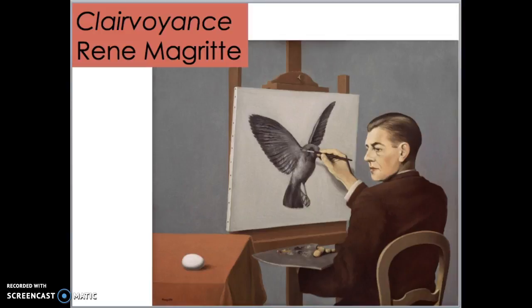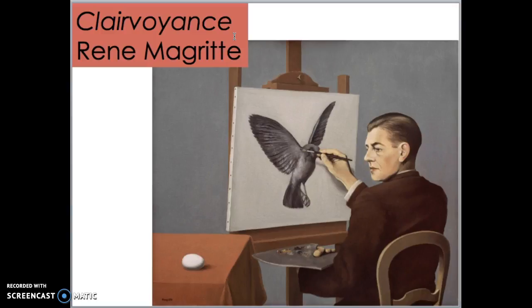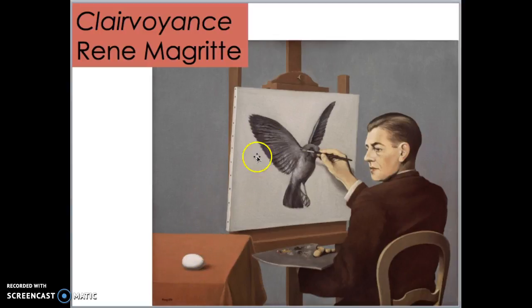Here's another title, and once you learn it you're going to love knowing this word: Clairvoyance. Say it again — clairvoyance. Clairvoyance means that you can see into the future. You could say, 'With my clairvoyance, I can see that we are going to win the game,' and you sound super smart and athletic. How is this guy using clairvoyance? He's looking at an egg, but he can see into the future — so he knows it's going to turn into a bird. That's a very cool title by René Magritte: Clairvoyance.